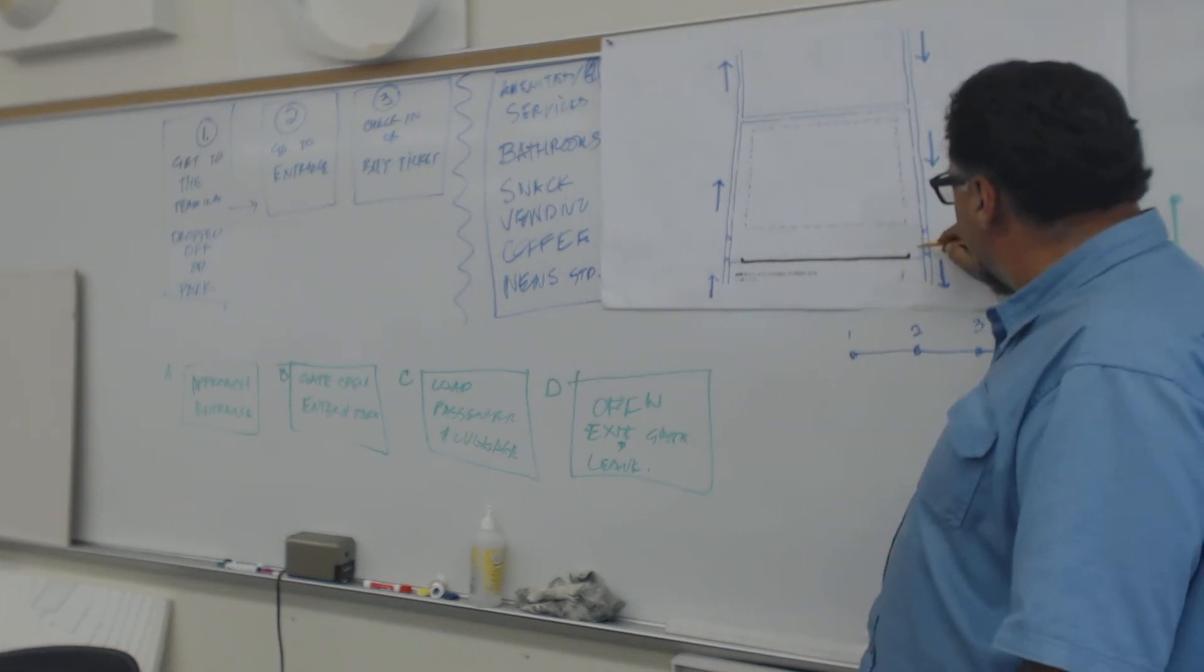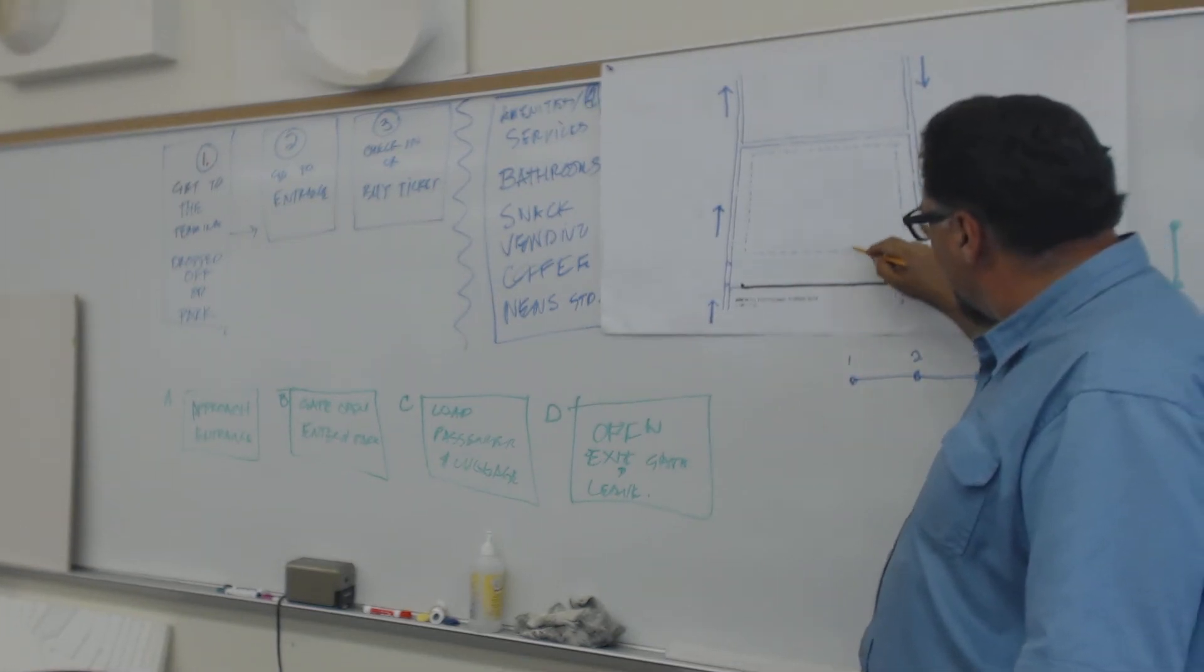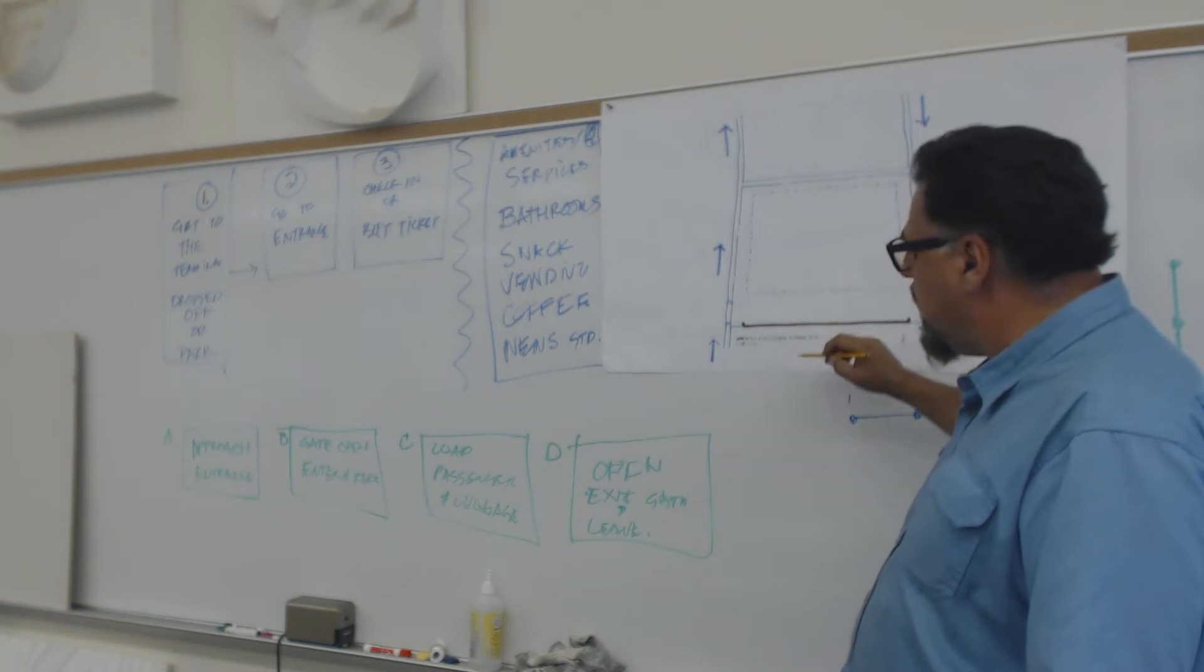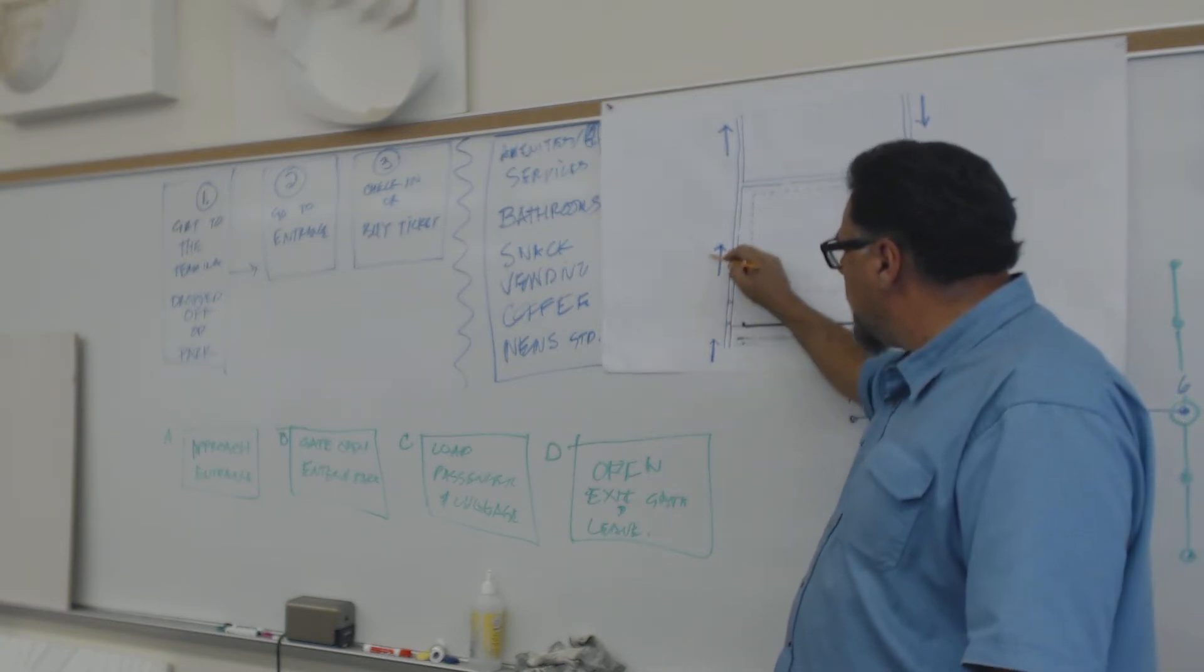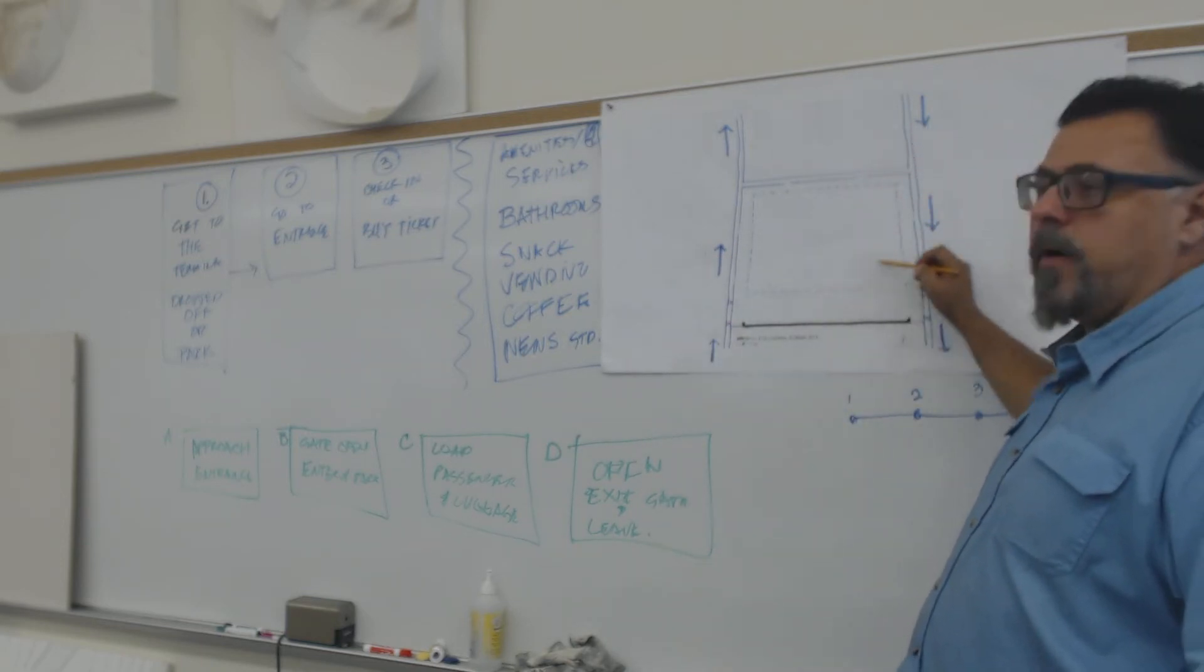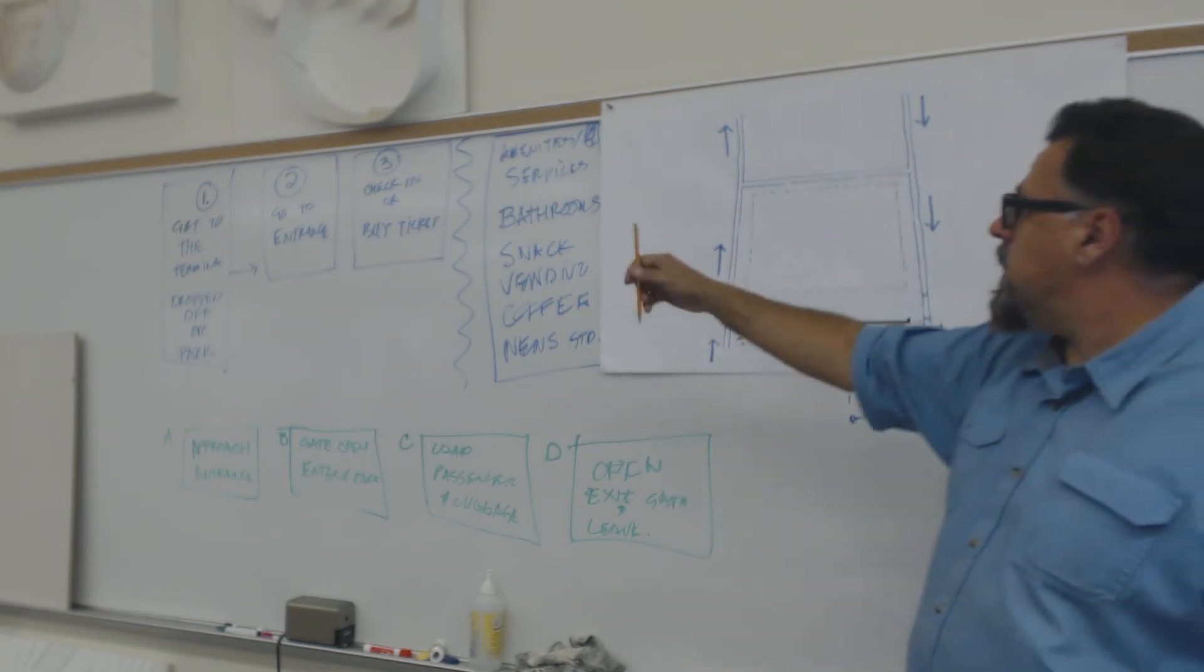So then they open the gate. This is B. Then they come in. They park. That's C. Then they back up, open the gate, and then they finally leave, right? So the buses are somewhere. Now we've got to do the other sequence.